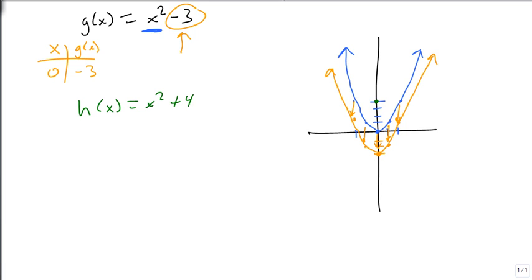In which case, we start up at up 4. And we go over 1, up 1. And over 1 more and up 1, 2, 3. This graph, which is now up 4 higher.